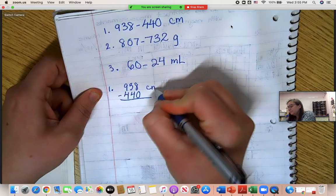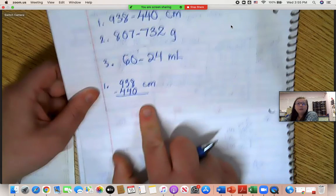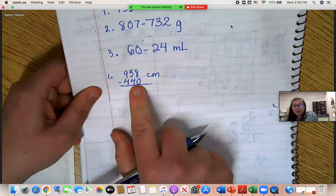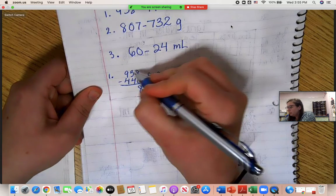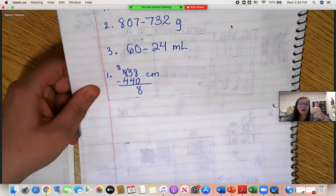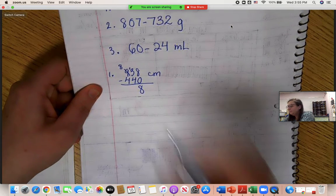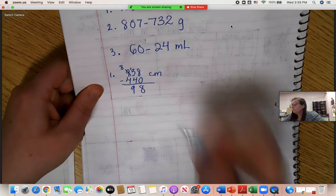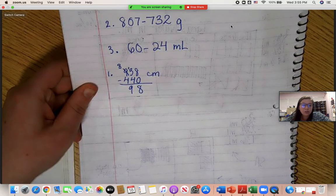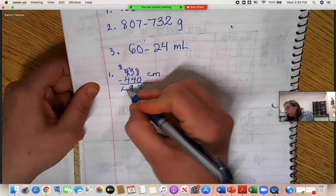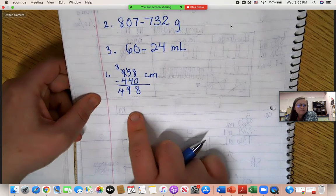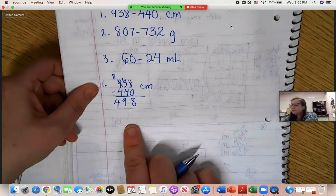This is centimeters. Eight minus zero. Eight. Three minus four. Can't do. Got to regroup, right? Thirteen minus four. Thirteen, twelve, ten, nine. Eight minus four. Well, I know four is half of eight, so two of fours is eight. So, four. 498 what? Centimeters.